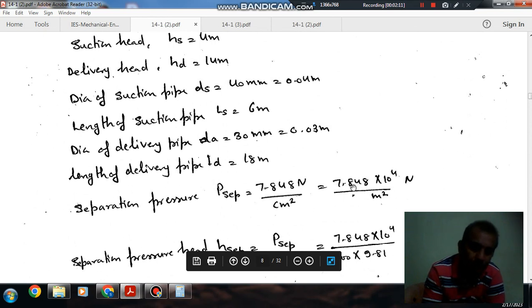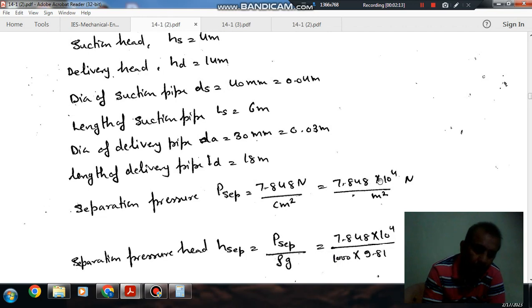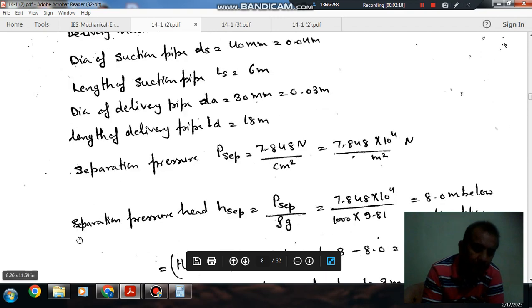Converting to proper units, it will be 7.848 × 10⁴ N/m². This separation pressure divided by ρg will be 8 meters.